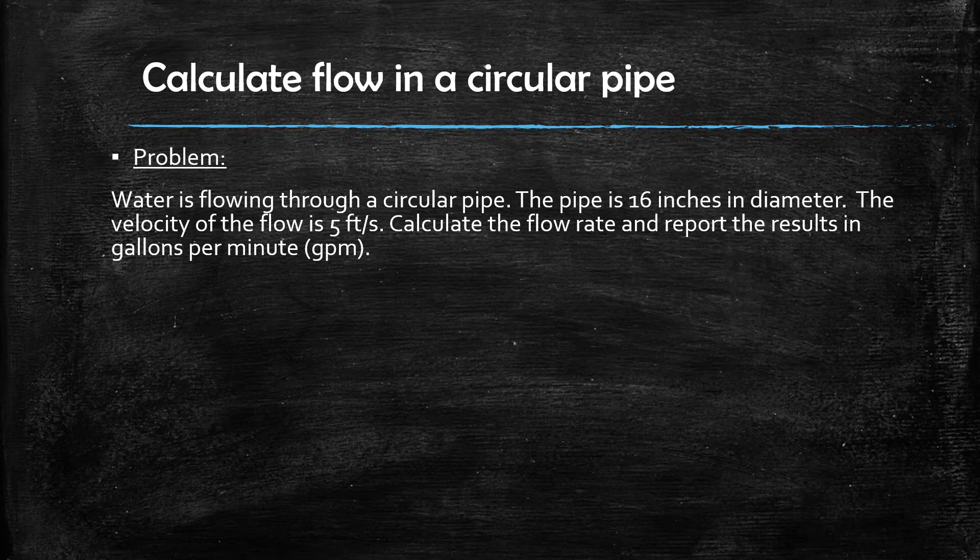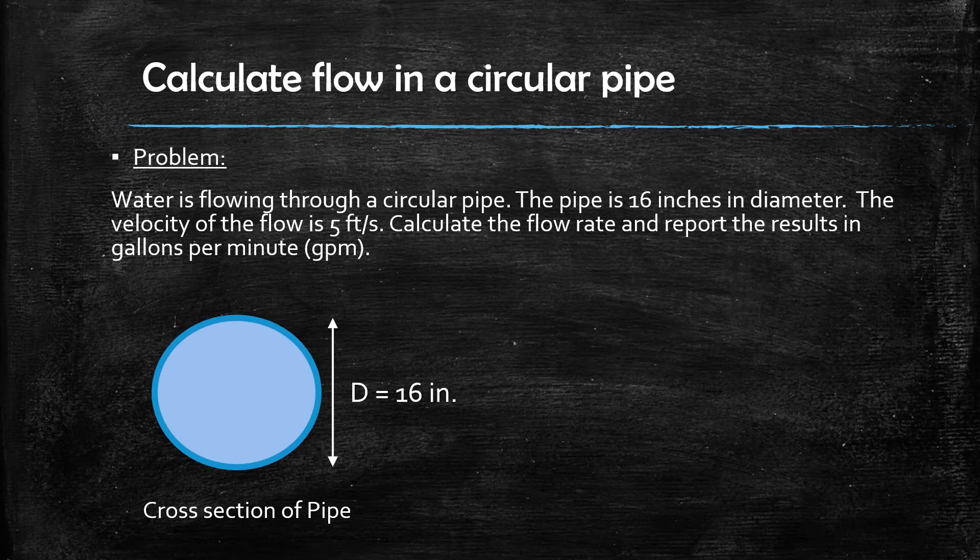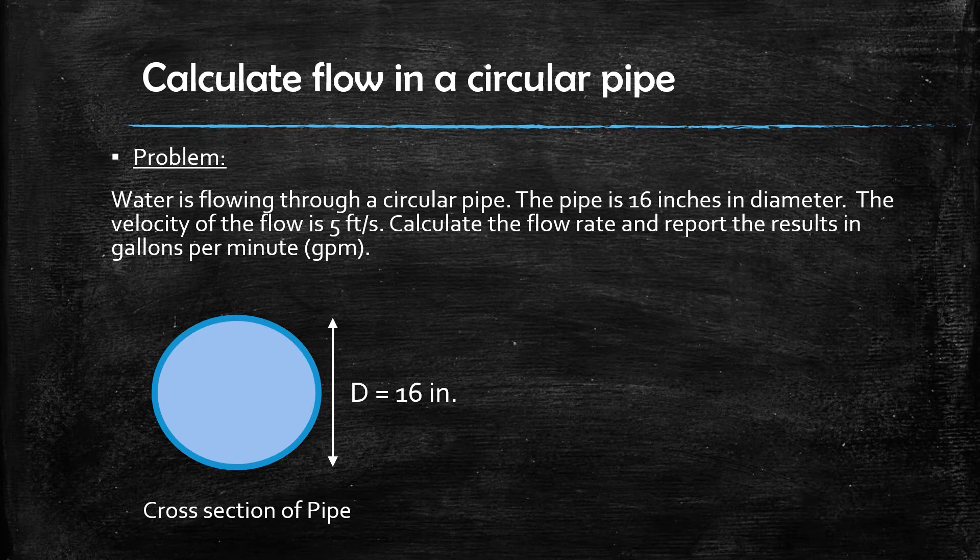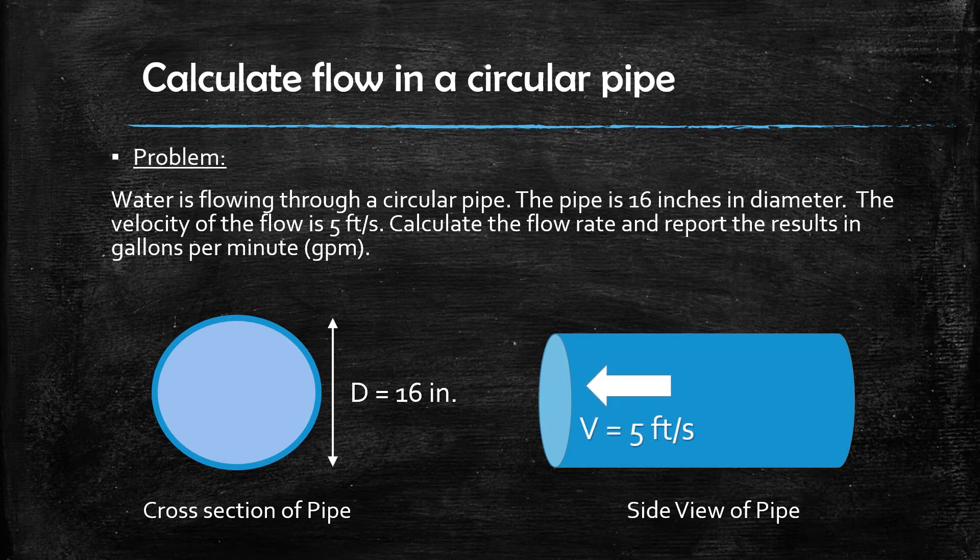Before we get started, let's talk for a minute about the physical problem that we are solving. Here is a cross section of the pipe with the dimensions labeled. We can see here that the diameter of the pipe is 16 inches. We can also see from the side view that the velocity of the flow is 5 feet per second. This is a real type application and could be either a pipe or a circular channel that is flowing completely full.